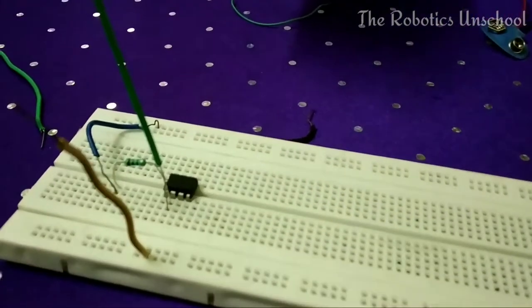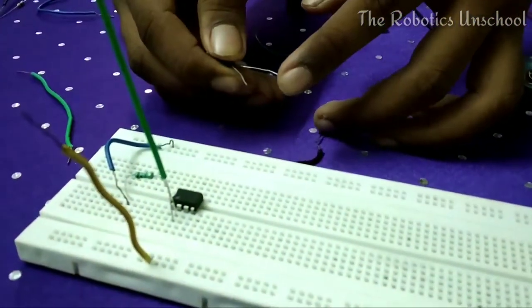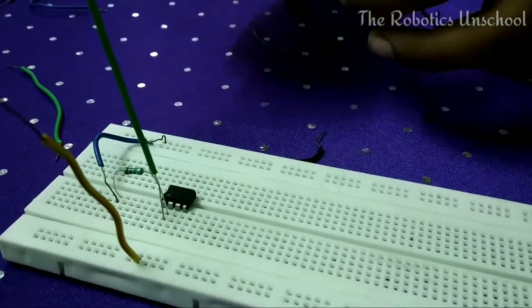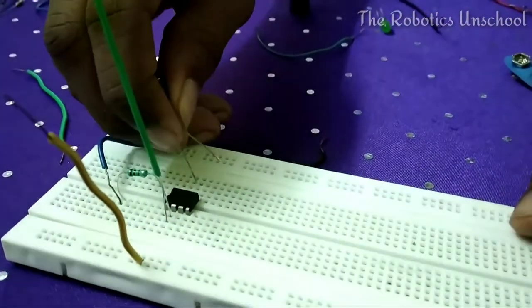From the sixth pin, we have to connect the capacitor. The longer pin is positive and the shorter pin is negative, so from pin 6 we have to connect the positive pin and connect it to the negative of the breadboard.